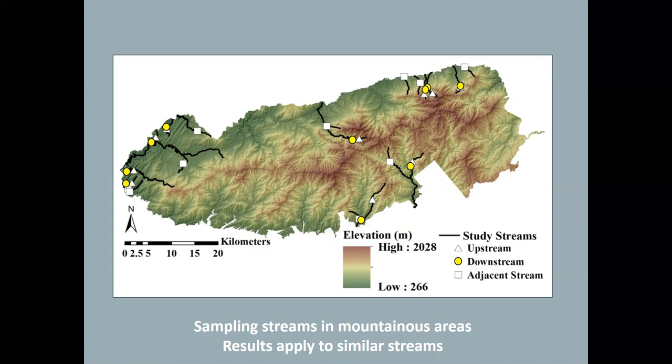These streams are in mountainous areas. They're higher gradient streams. So the results of this study really apply to similar streams. These rocky mountain streams that have higher gradients. It would not be really appropriate to transfer this information directly to like a coastal plain stream just because the systems are very different.